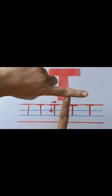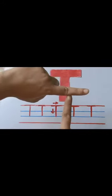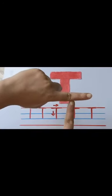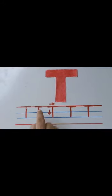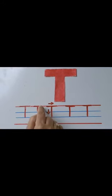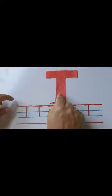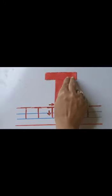So, this is letter T. Capital letter T. One standing line and one sleeping line. One standing line, one sleeping line makes capital letter T. One standing line.